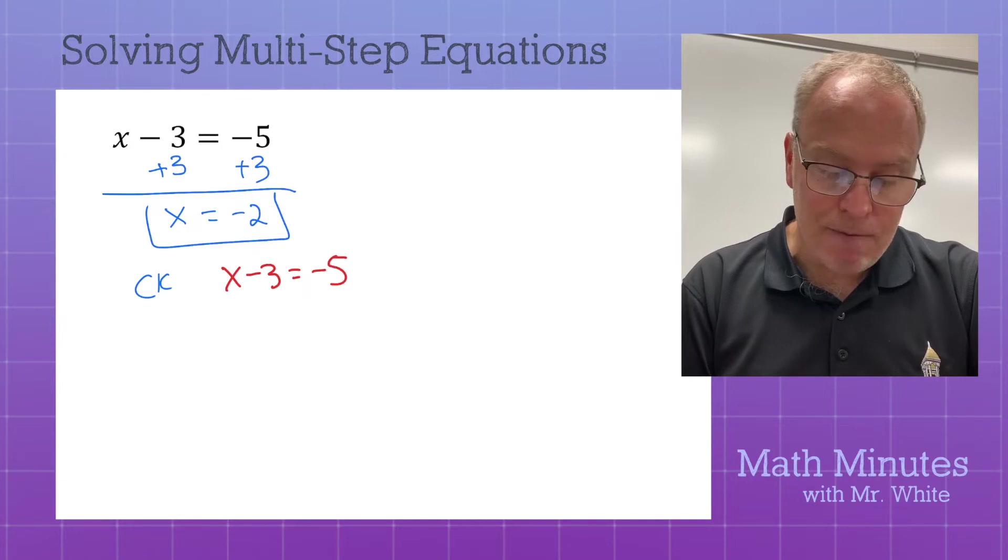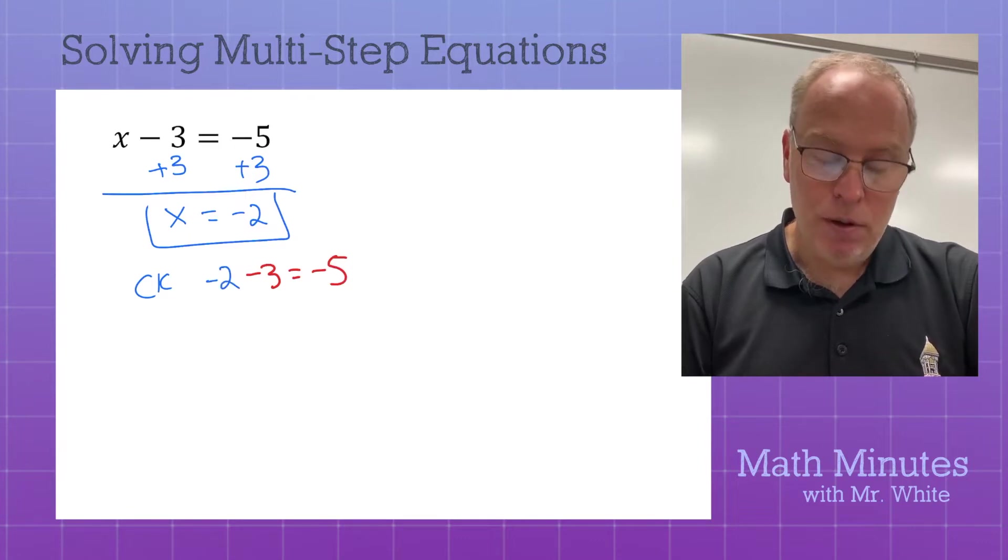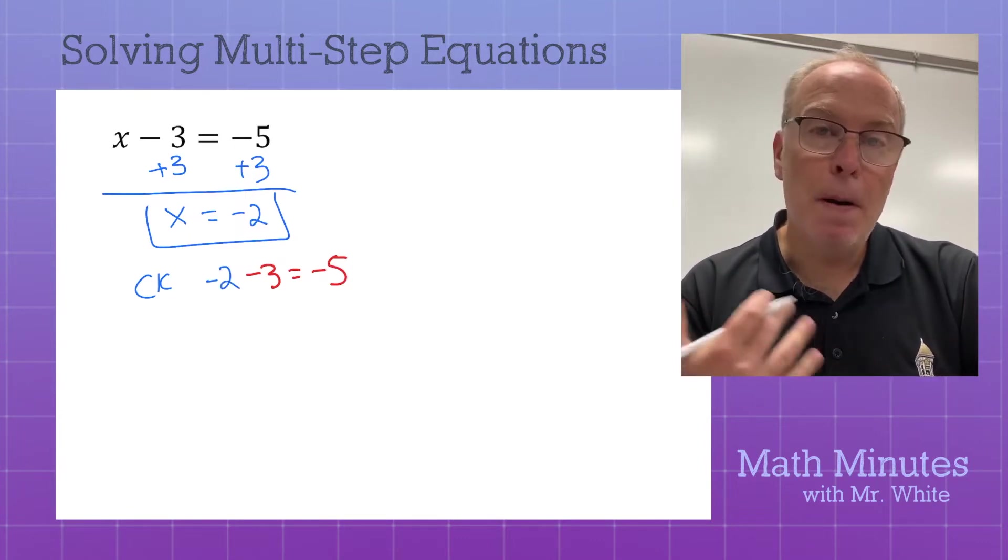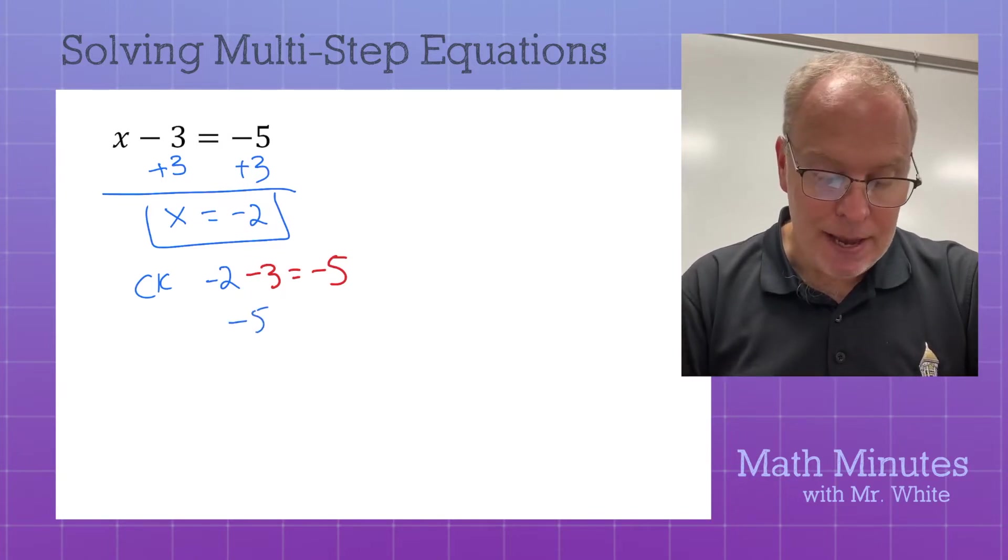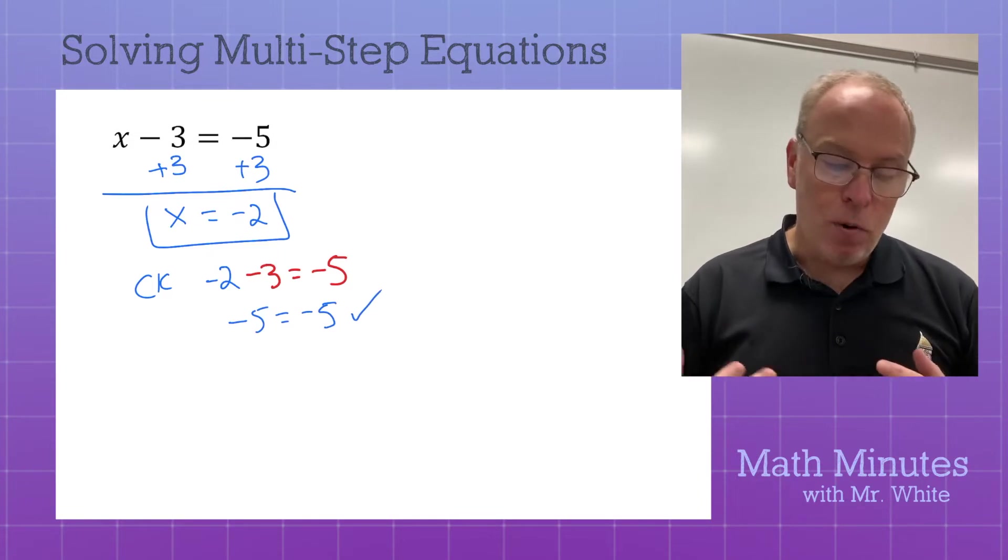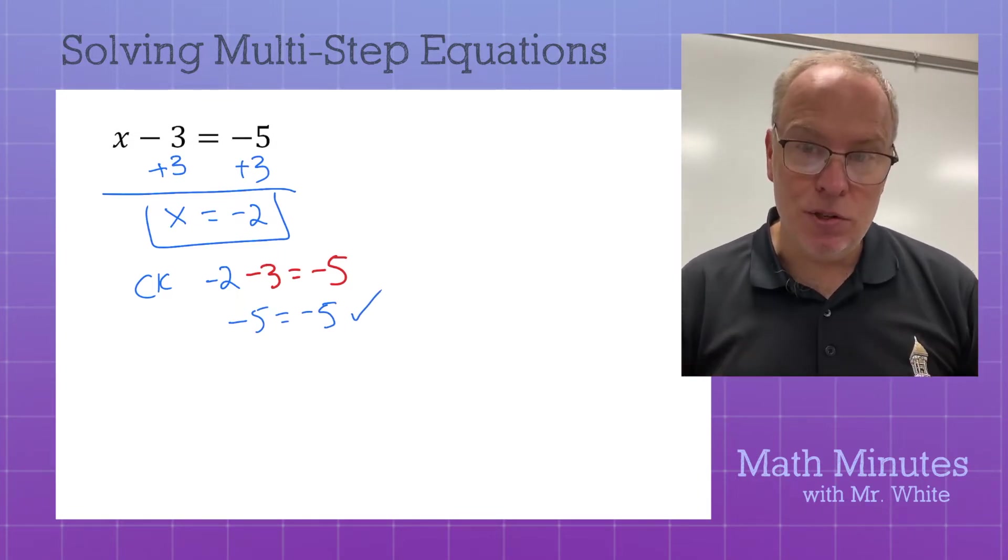We're going to do the check. x minus 3 is negative 5. I'm going to swap out that x. And what am I putting in? My solution. Negative 2 minus 3 is the same as negative 2 plus negative 3. Negative 5 does equal negative 5. It worked, so therefore x equals negative 2 is the solution.